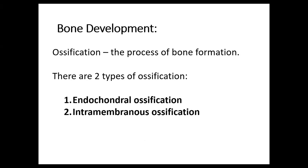Number two: what is ossification or osteogenesis? Basically it is the process of bone formation. There are two types: endochondrial and intramembranous. Number three: bone growth, which is another form of ossification, starts at the age of two and continues into early adulthood.